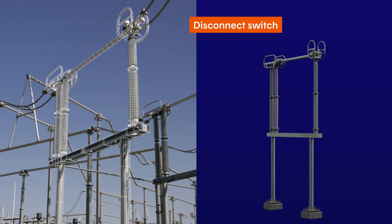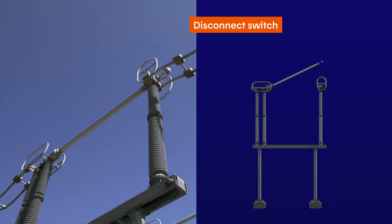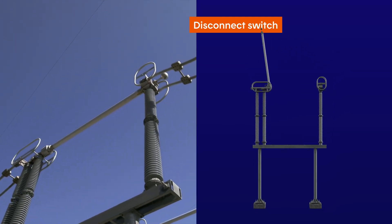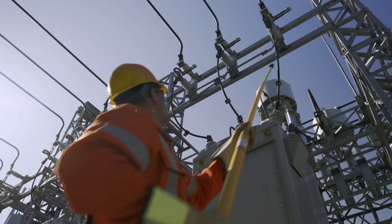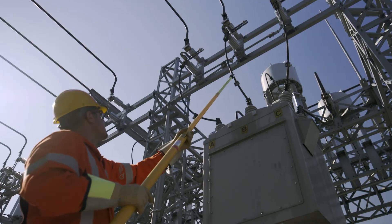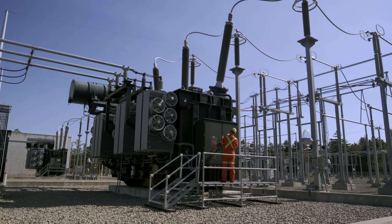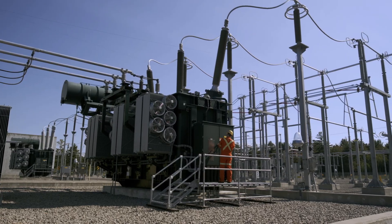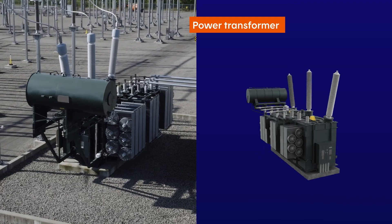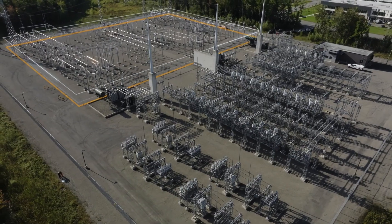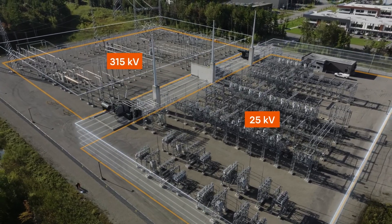The disconnect switch is a huge switch. It's easy to see if it's open or closed. It's used in different places to disconnect equipment from the grid or provide an alternative path for the electricity. The disconnect switch is essential to keep people safe. This is the power transformer — the heart of the substation. It's inside this giant green box that the voltage is raised or lowered. Here, the transformer lowers the voltage from 315,000 to 25,000 volts.